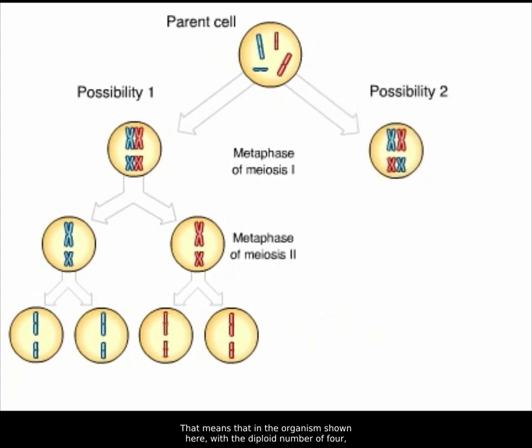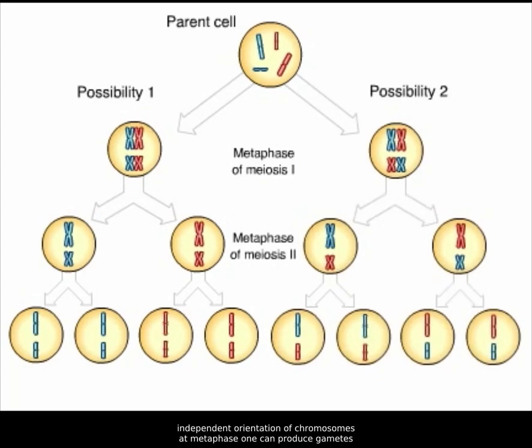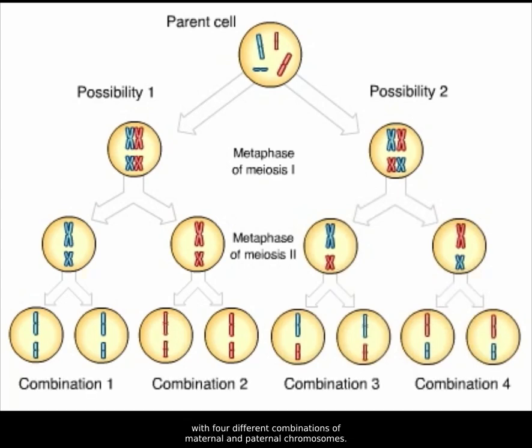That means that in the organism shown here, with the diploid number of four, independent orientation of chromosomes at metaphase I can produce gametes with four different combinations of maternal and paternal chromosomes. In a human being, with 46 chromosomes, more than 8 million combinations are possible.